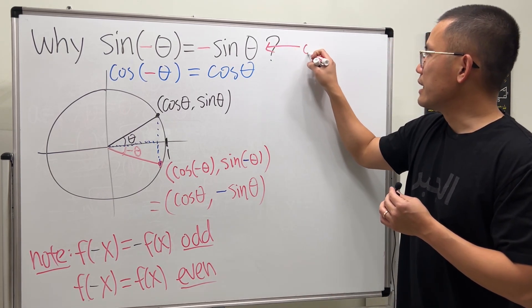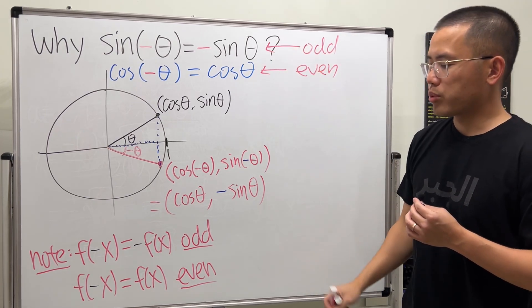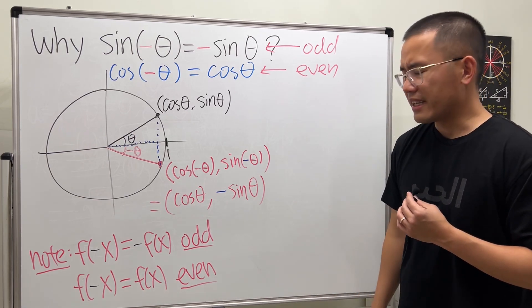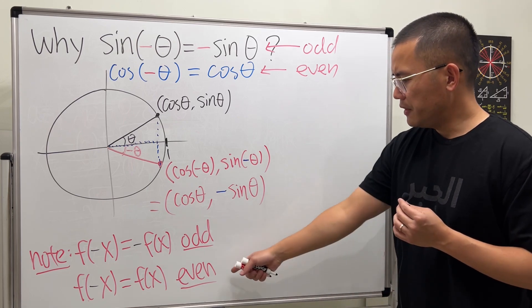So as you can see, sine is an odd function and cosine is an even function because they have these properties. And now you might be wondering, odd is like odd numbers like 1, 3, 5, 17.